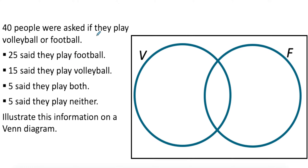If I have 40 people asked if they play volleyball or football, and 25 say they play football, 15 say they play volleyball, 5 say they play both, and 5 say they play neither — if you add up all the numbers you'll immediately notice they don't add up to 40. This is because of double counting: people that play both are also counted inside the 15 and the 25, so they're being counted three times.